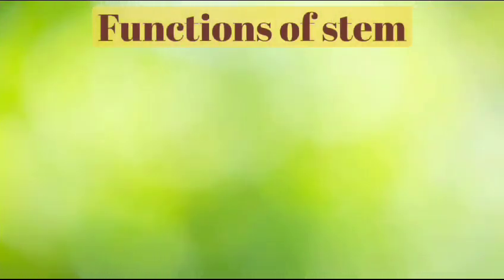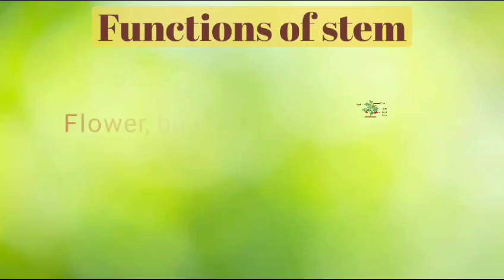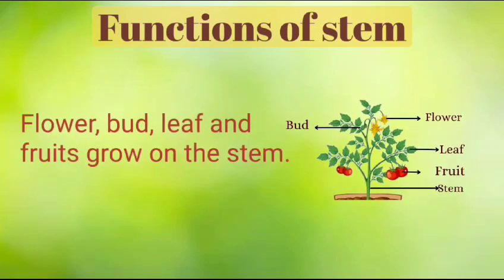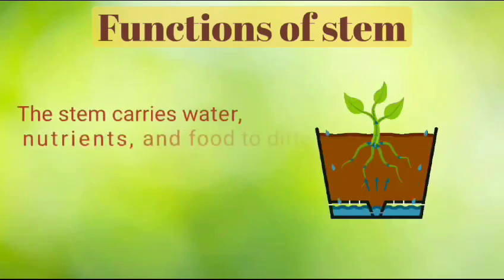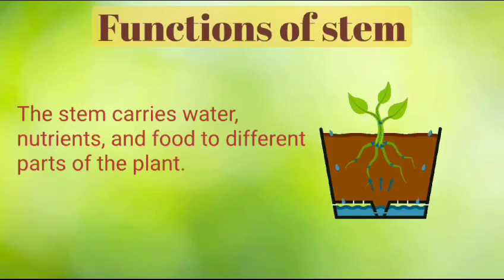Function of Stem. It keeps the plant upright and straight. Flowers, bud, leaf and fruit grow on the stem. The stem carries water, nutrients and food to different parts of the plant.